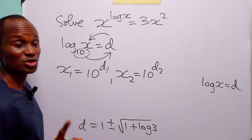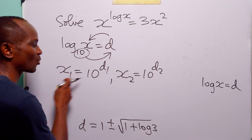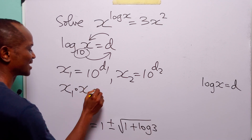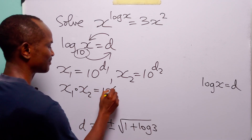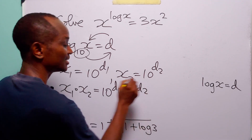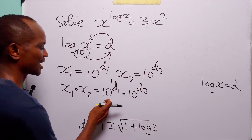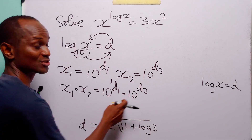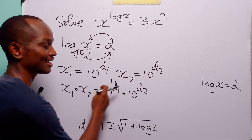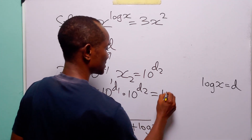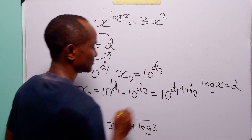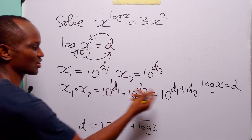The product of the roots, x₁ times x₂, equals 10^(d₁) multiplied by 10^(d₂). Since these have the same base, we add the exponents, giving us 10^(d₁ + d₂).